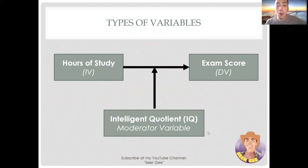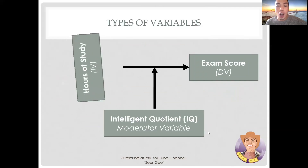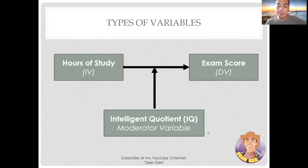For example, suppose you are studying the performance of students in one particular subject. You believe that the overall exam score of the students is more likely to get affected depending on the number of hours the students will study. But you personally know that the result could vary depending on the intelligent quotient or IQ, which is a natural variation in each individual student. Specifically, just because a student spent a lot of hours studying the lessons doesn't mean that he or she could get a better score, because the IQ of one student has a strong effect on the scores. Thus, the IQ of the student could modify the expected result.